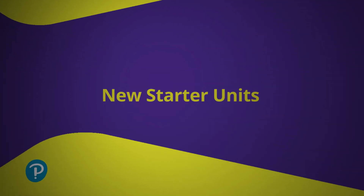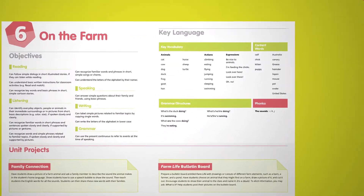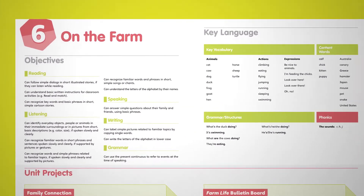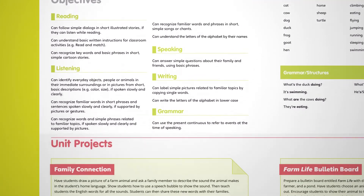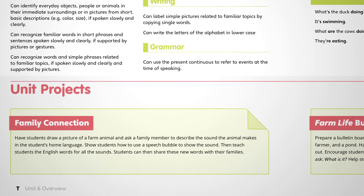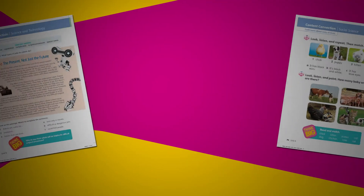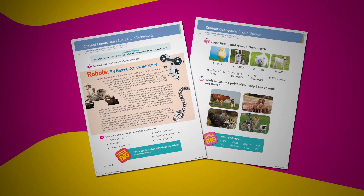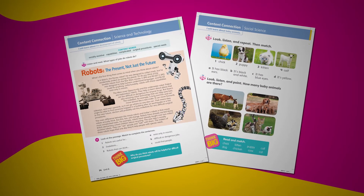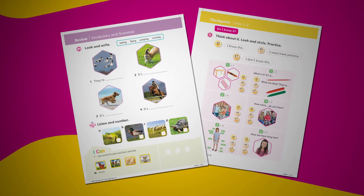One new feature of the student book are the starter units. These appear at the start of every level and are effectively a review of the previous level, giving students the confidence and ability to start the next level. We have also made enhancements to the three educational pillars. Specifically, in the CLIL student book pages, we've got new content that will better engage learners.